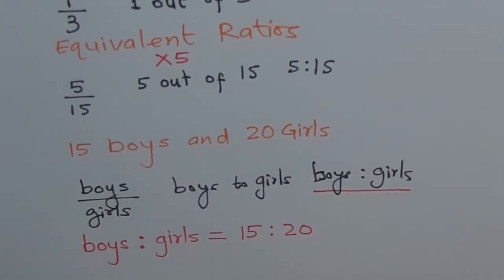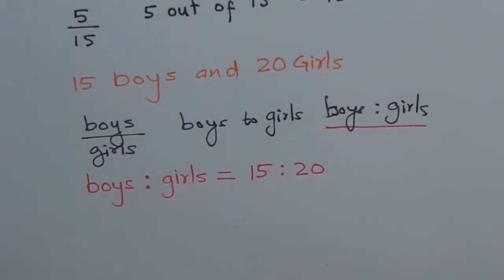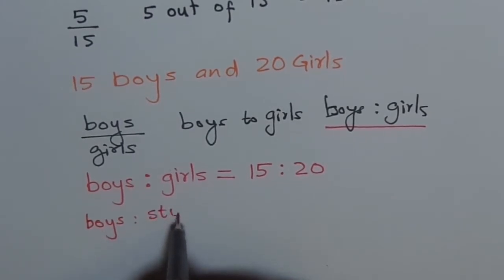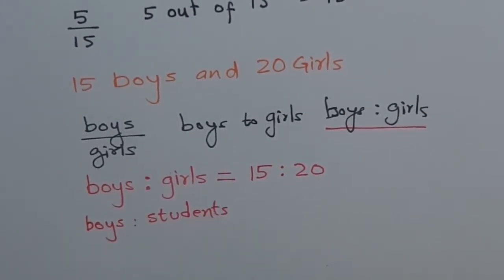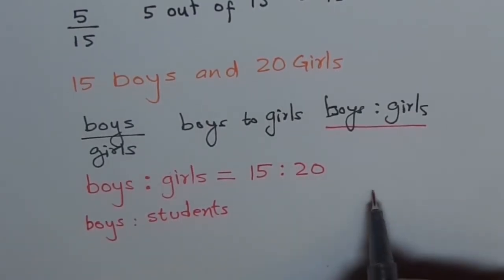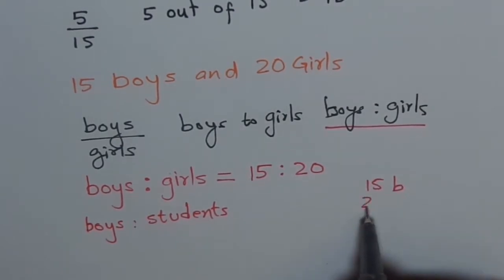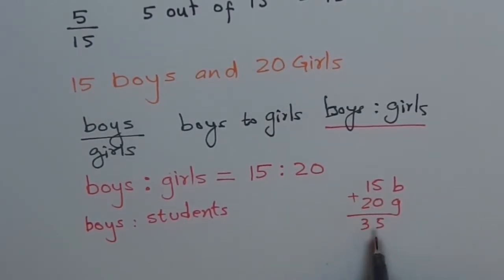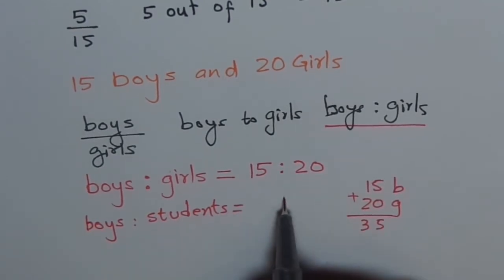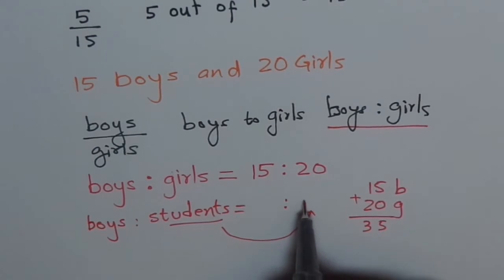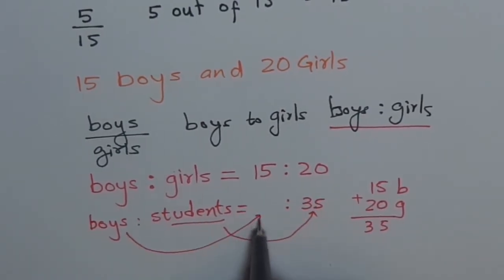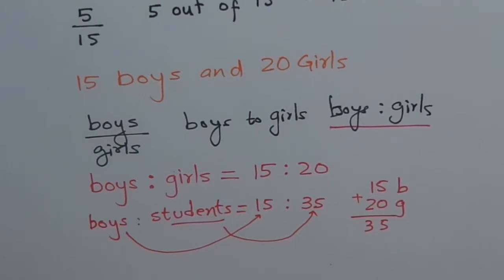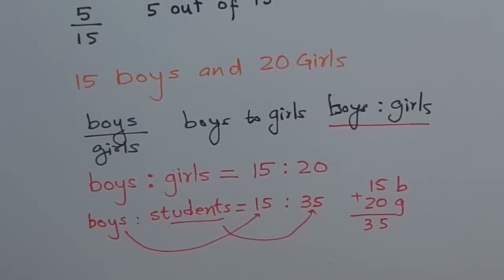Now if I say what is the ratio of number of boys to students in class? What I am trying to say is boys to students. Now how many students are there? Well there are 15 boys, I am writing B for boys, and 20 girls. So total is how much? Add them up. So you get 5 and 3, 35. So total students are how much? 35. We will write 15. So the ratio of boys to students in this class is 15 is to 35. That is how we see and understand ratios.